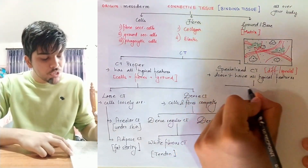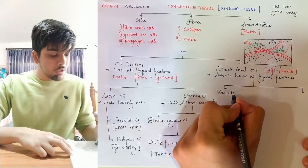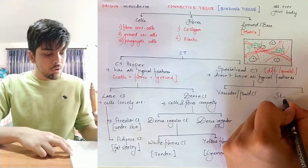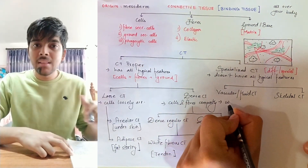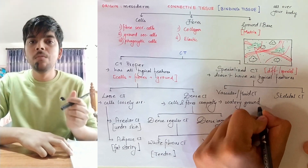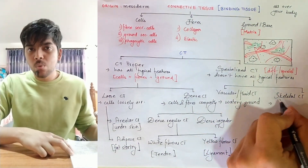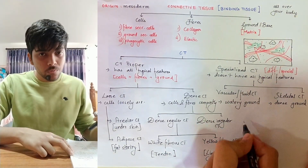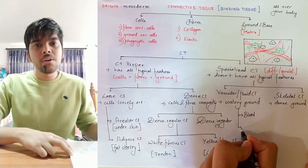Under specialized connective tissue, we will mainly discuss two types. First is vascular or fluid connective tissue, called so due to the presence of a watery or fluid ground on which the cells lie. Second is skeletal connective tissue, where the ground or base is compact.